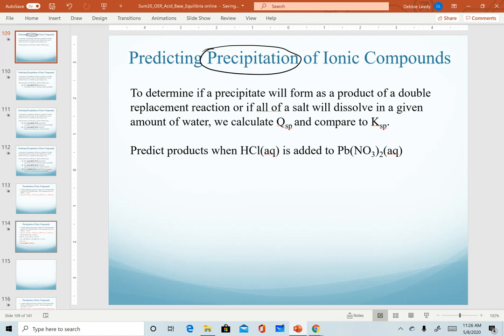In first semester chemistry, when you carried out a double replacement reaction, we could predict precipitation using solubility rules. But it turns out that even if we predict a precipitate to form, depending on how much concentration of our reactants we use, we might not get precipitation.